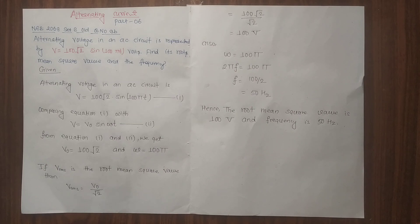An alternating voltage in a circuit is represented by V = 100 cos(100πT). Find the root mean square value of the frequency.